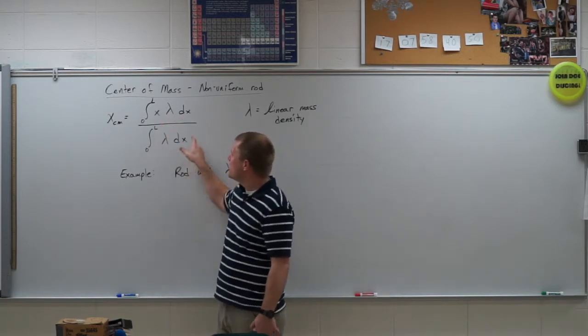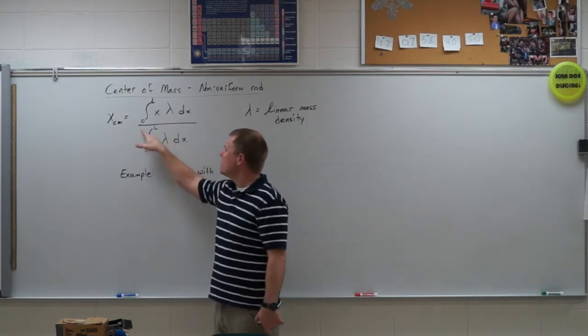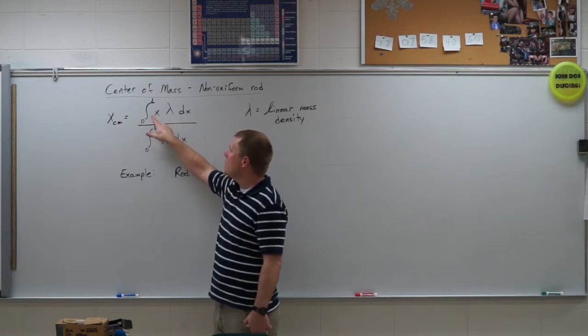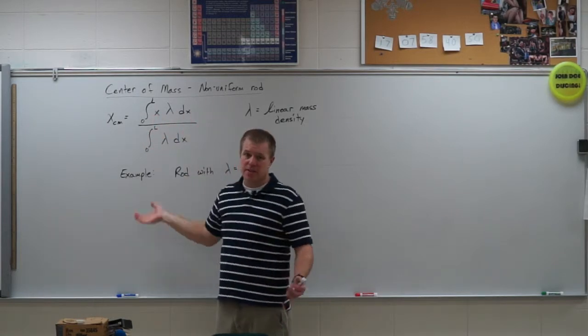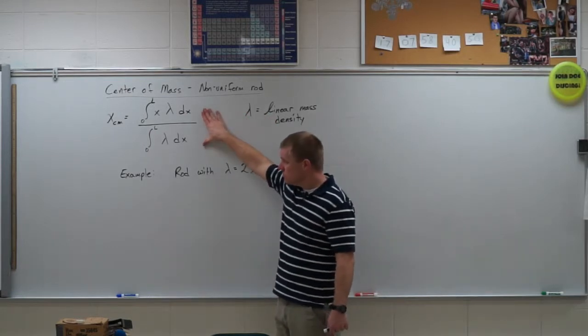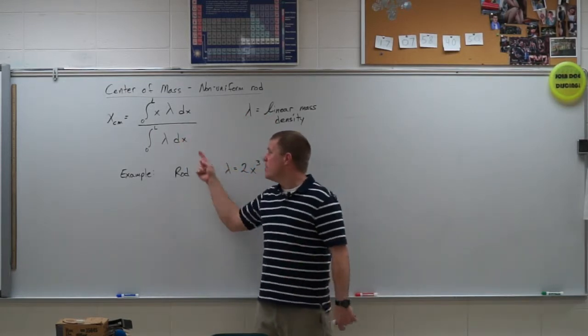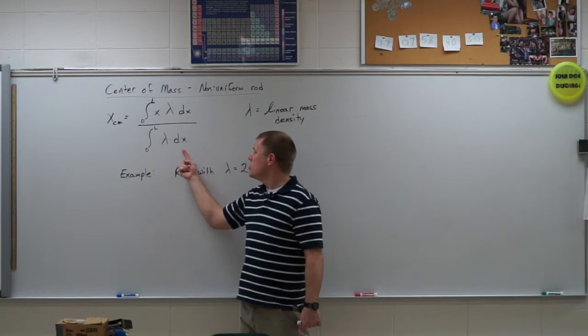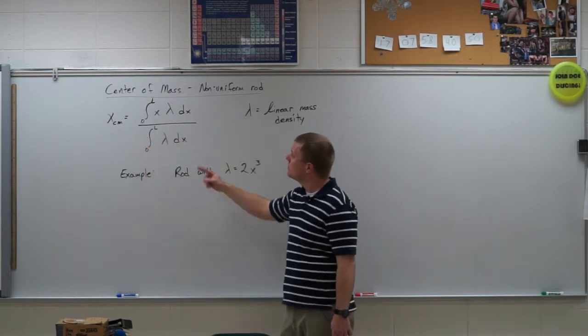And then we have the same thing. So the bottom is the mass of the rod, and the top is going to be x times the mass of the rod. So, this is our equation. Again, if you just needed to find the mass of a non-uniform rod, you would just be using this thing on the bottom.